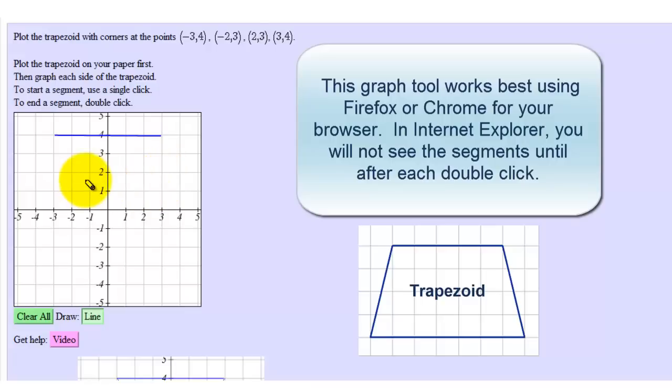And the next side starts at this point here and ends at the point 2, 3. So I'll single click here, move the mouse to the point 2, 3, which is here, and double click.